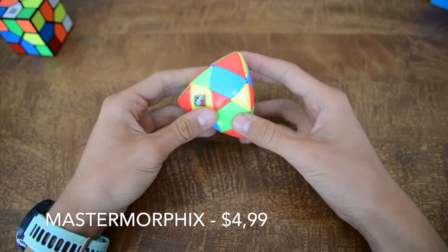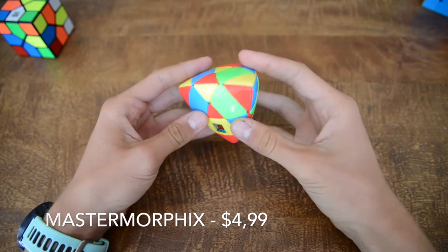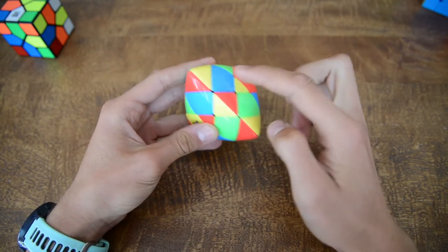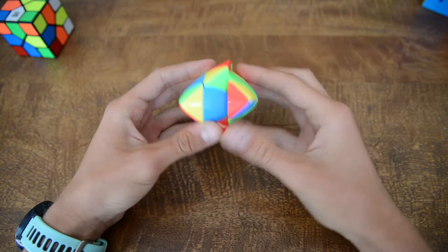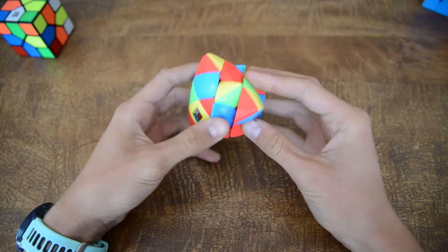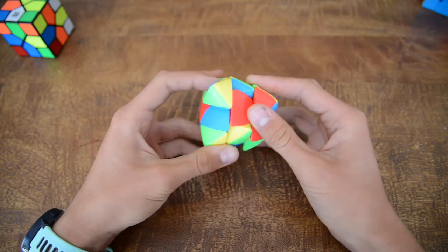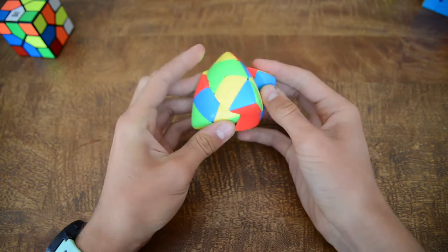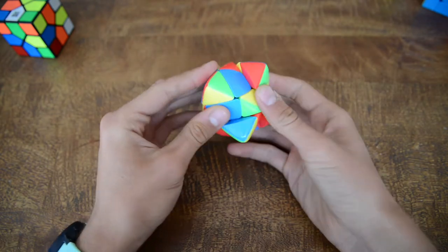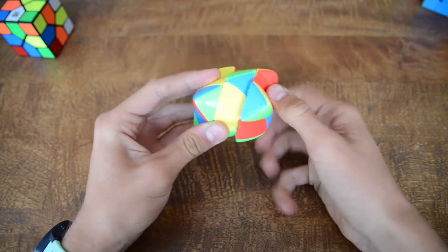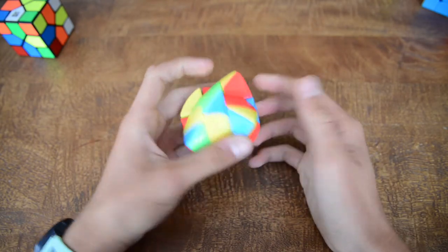Next up, this is the Master Morphix. This is basically a 3x3. As you can see, this is the cross, this is the center piece, this is the corner. When I unboxed it, it turned so bad and I was really disappointed with this puzzle. But right now, it is actually a quite nice turning puzzle. It's actually really satisfying to turn these layers because they shapeshift like a boss and this puzzle is really fun.